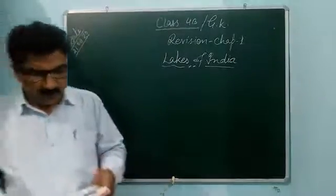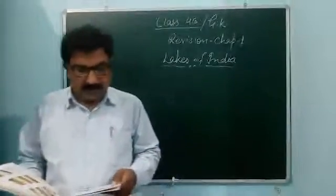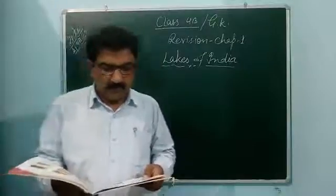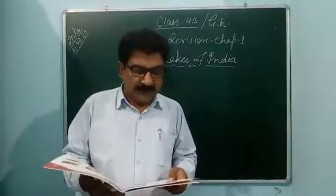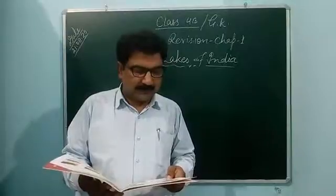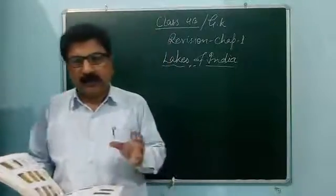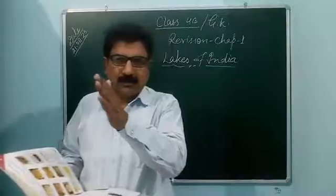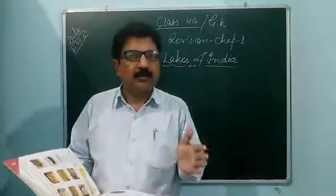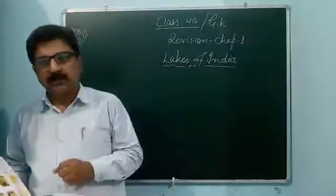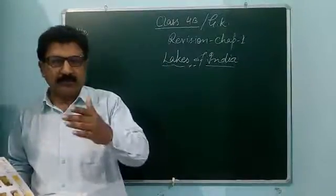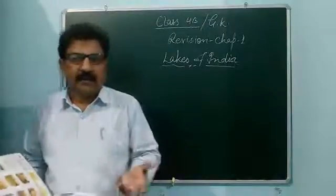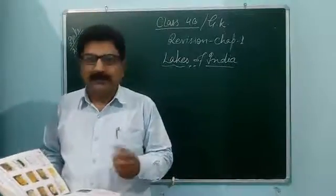First, on page number 4: located in Odisha, this lake is made up of 52 streams. It is the largest coastal lagoon of India and the second largest in the world. Lagoon is a large lake that is cut off from the main oceans or seas by natural or man-made means.